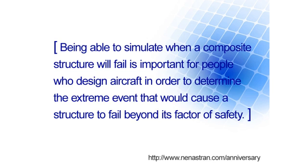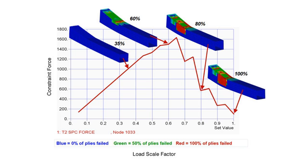The limit load is where you're supposed to take the structure — you're not supposed to go beyond that in operation. And then you put in a factor of safety above and beyond that. But what you also need to know is: I reach limit and I go beyond that, something extreme happens — when does the wing fall off? And that's what progressive ply failure does for you. It tells you that.